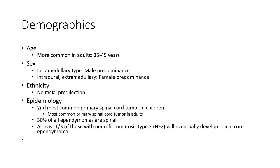Epidemiology: it is the second most common primary spinal cord tumor overall, and the most common primary spinal cord tumor in adults. 30% of all ependymomas are spinal. At least a certain proportion of those with neurofibromatosis type 2 will eventually develop spinal cord ependymoma.